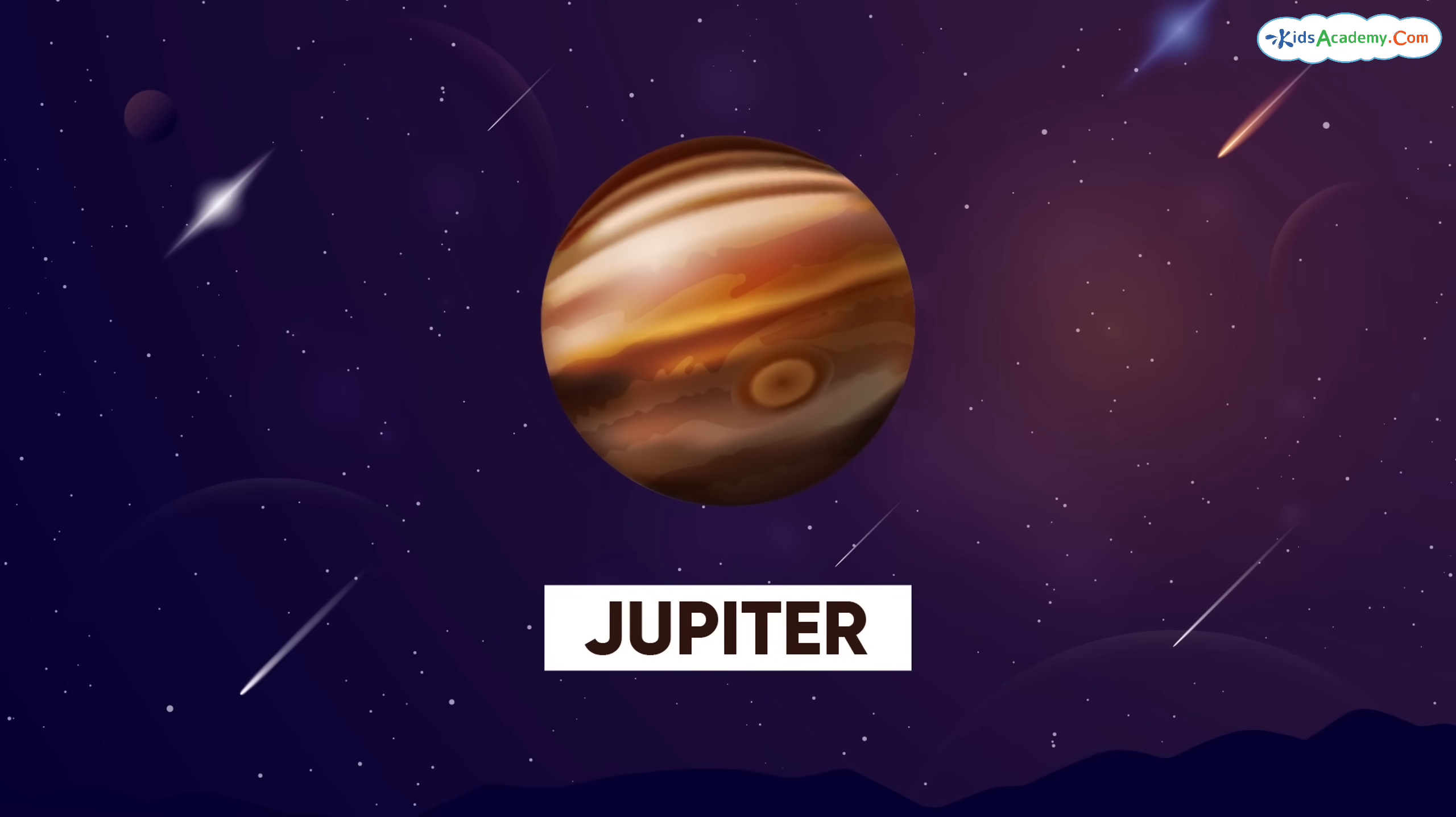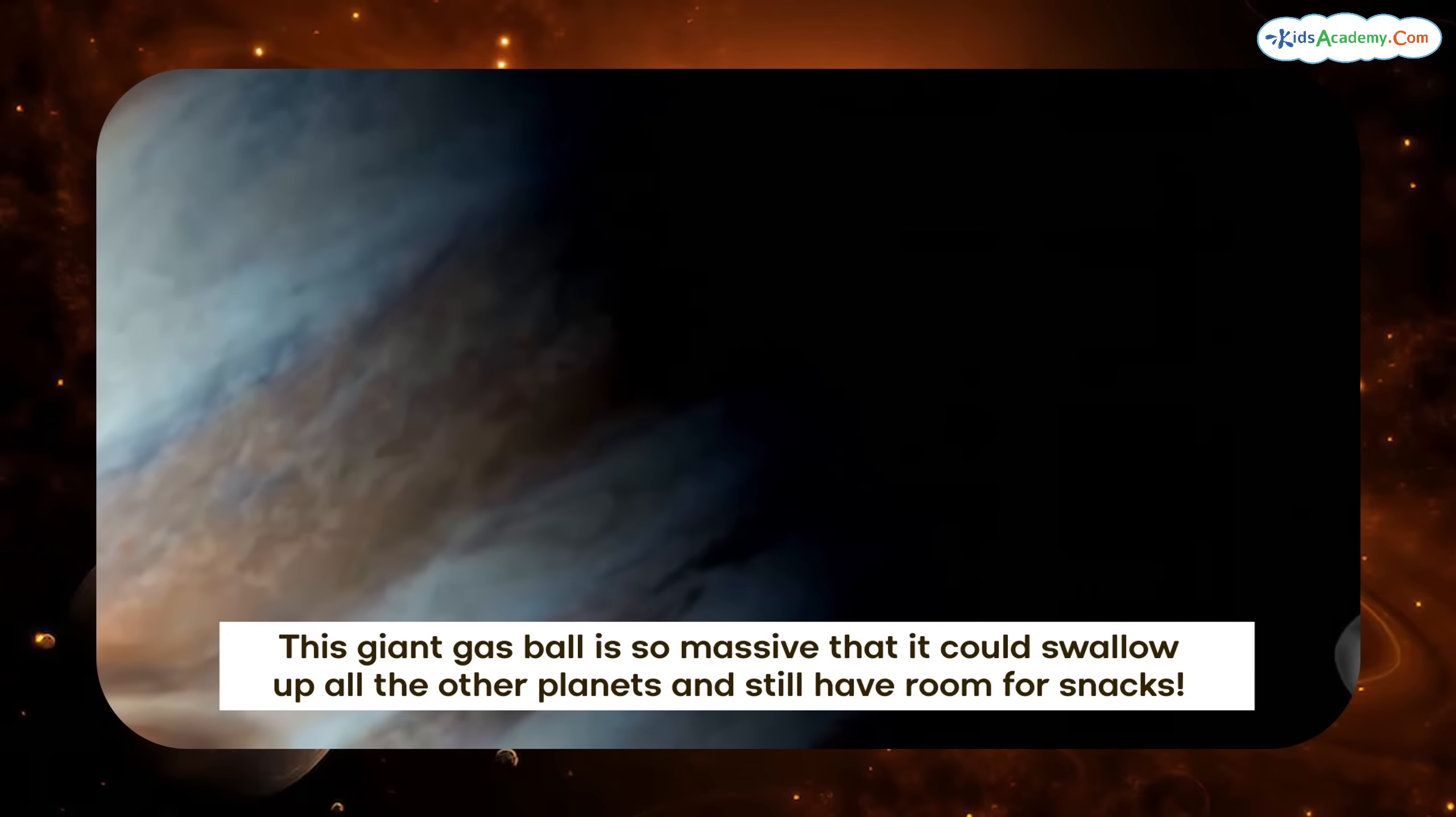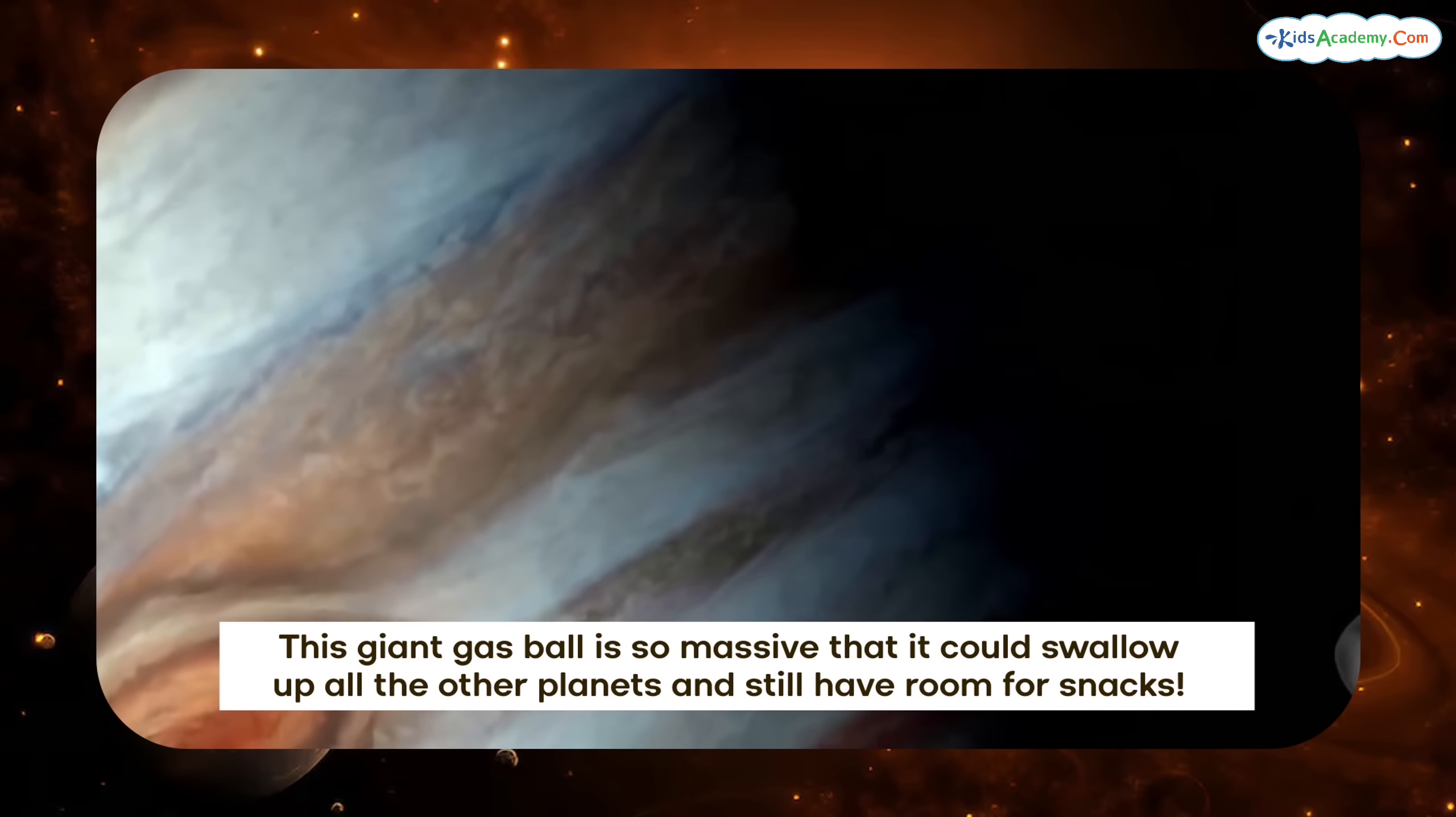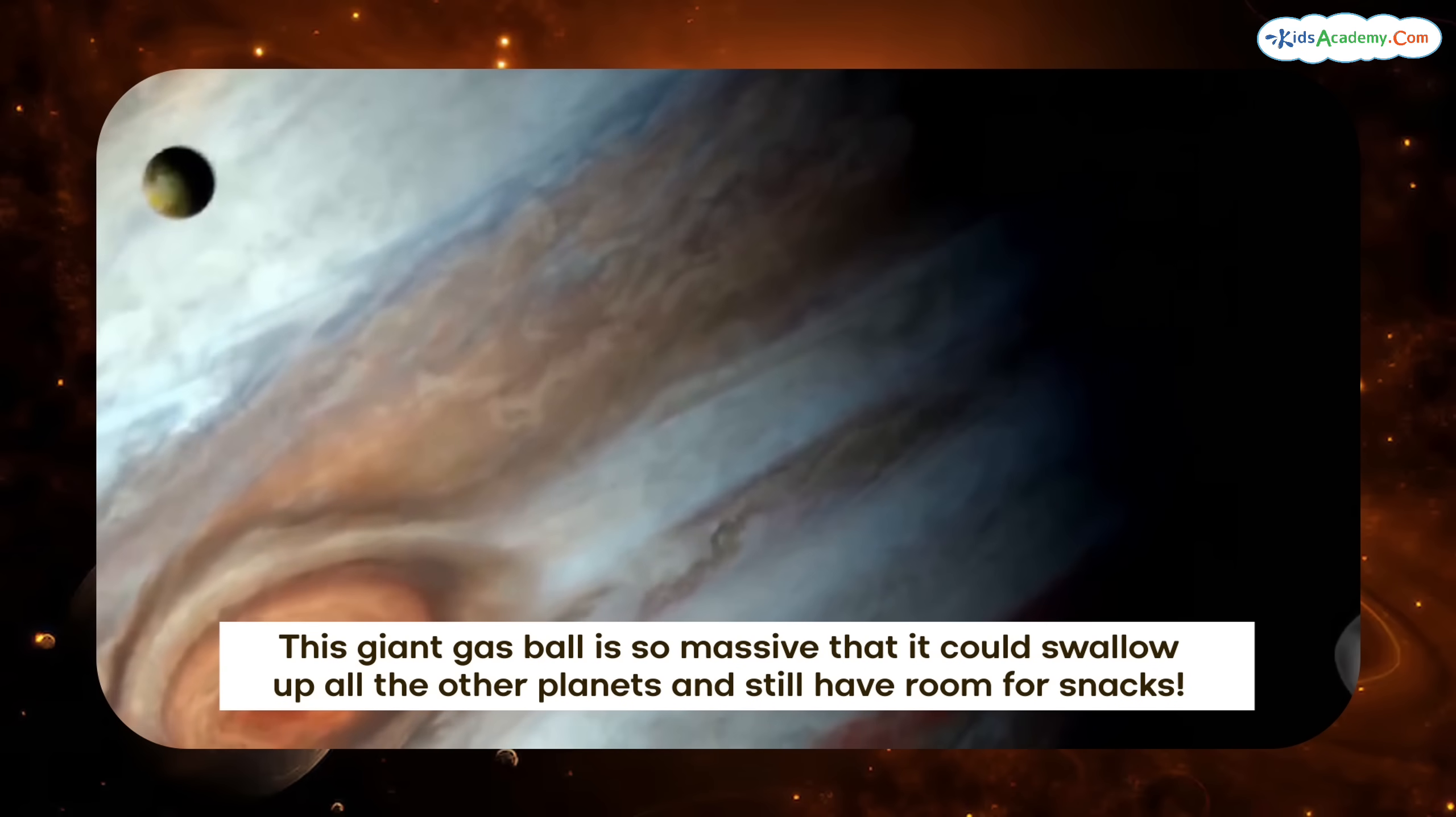Now, let's say hello to the big guys of the outer solar system. First up, we've got Jupiter, the king of the planets. This giant gas ball is so massive that it could swallow up all the other planets and still have room for snacks.